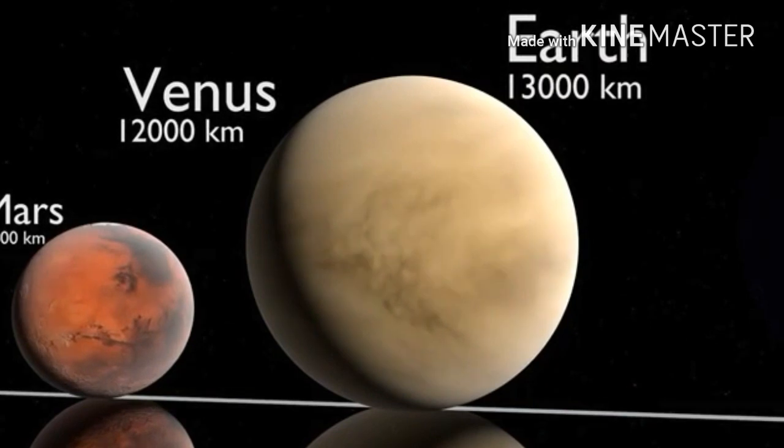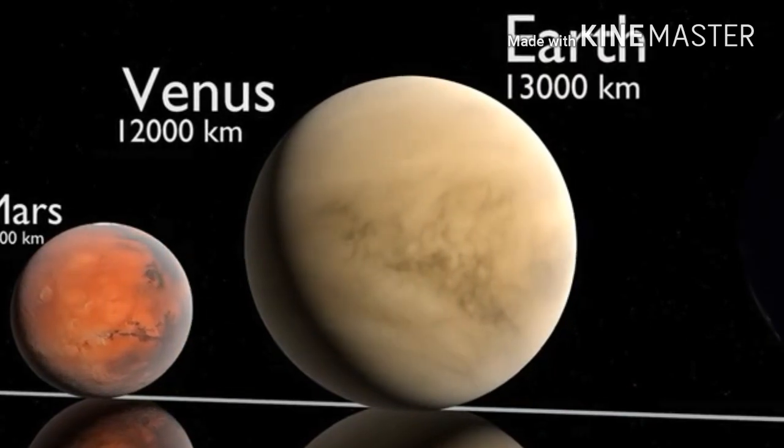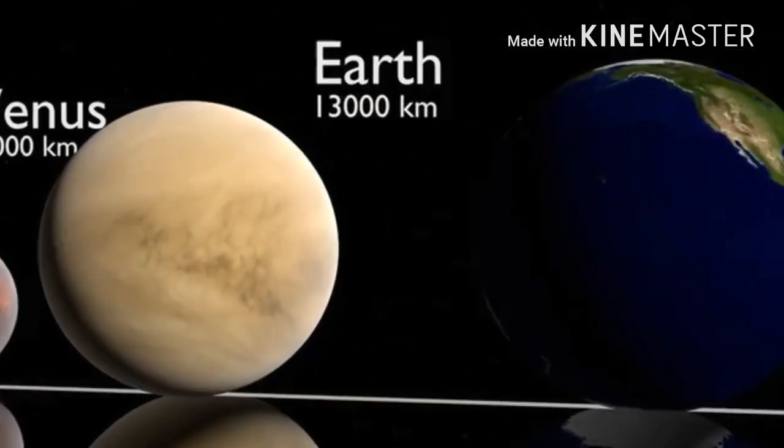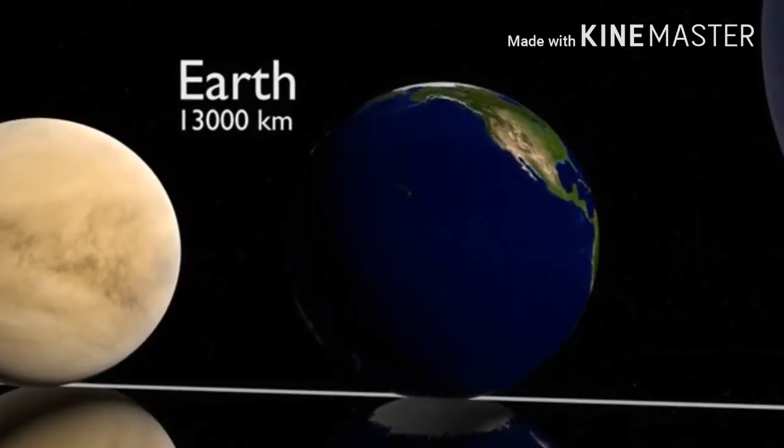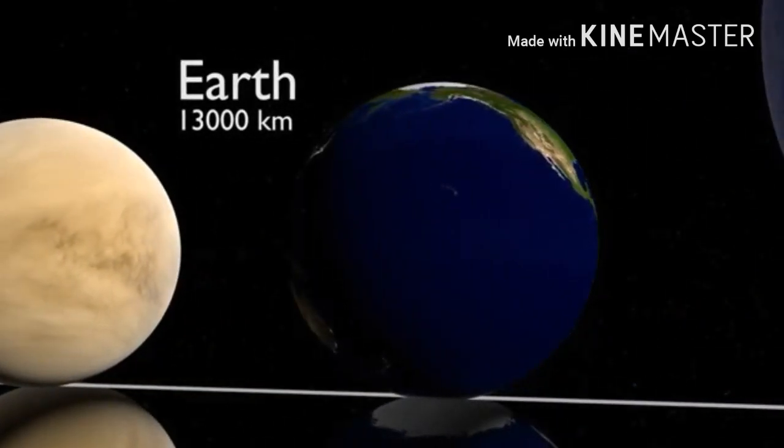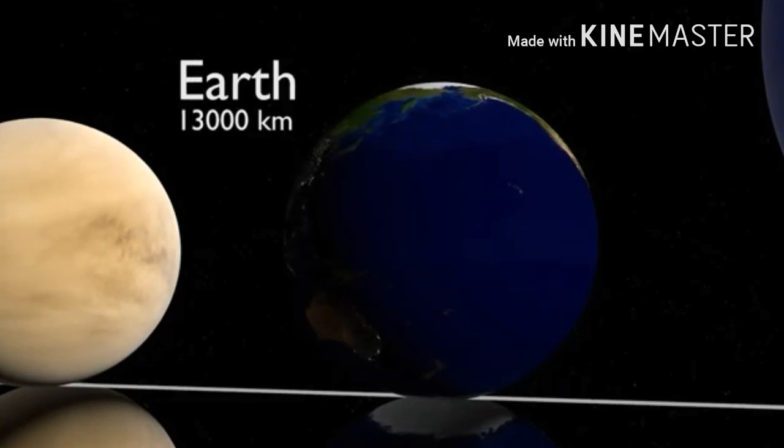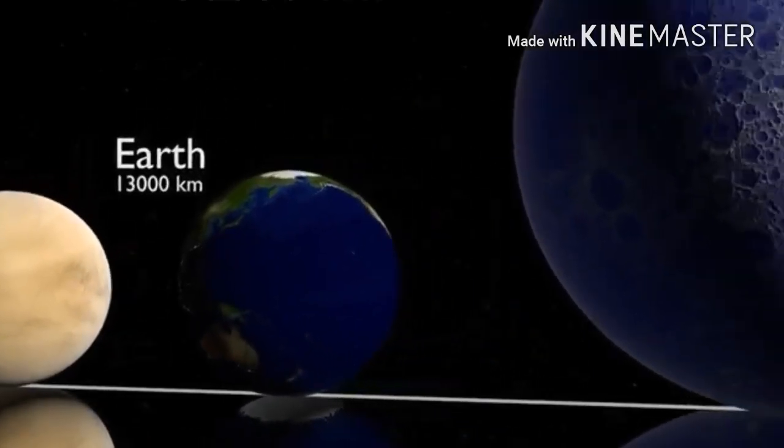Oh there comes Earth. Venus is 12,000. Wow, look at our Earth, so beautiful! Look at the view, I can see Hawaii from there. 13,000 kilometers.